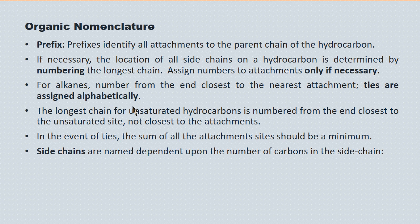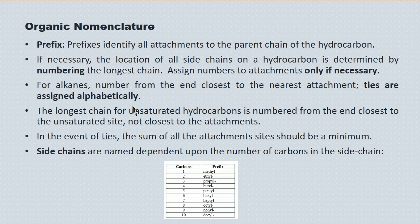Side chains are given a name that's independent of the name of the longest chain, though their names are quite similar. If you have a side chain with a single carbon in it, that's a methyl group. If you have a side chain with six carbons in it, that's a hexyl group. You'll notice these prefixes are very similar to the prefixes of the root.